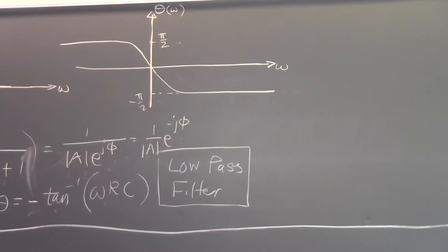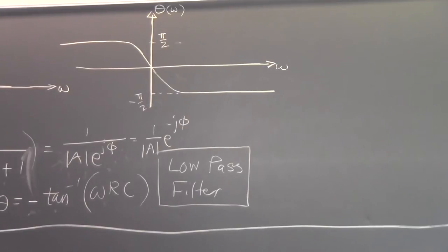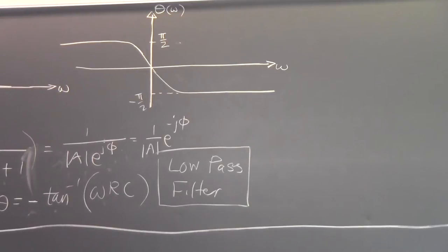At low frequency the impedance is very high, but at high frequency the impedance is very low because you don't have a chance to charge the capacitor. So at high frequency this becomes a short circuit, the voltage drop across it becomes very small, and that's why you have this frequency response. That is called the low-pass filter.